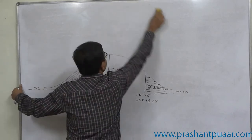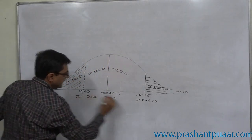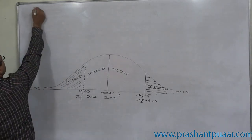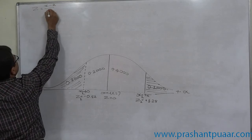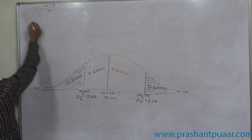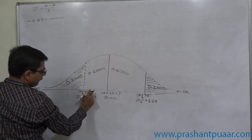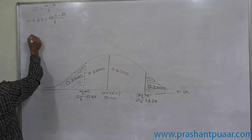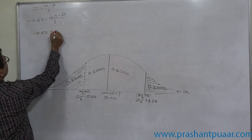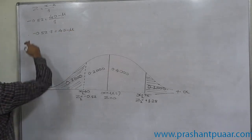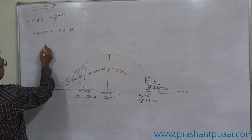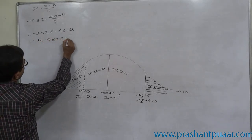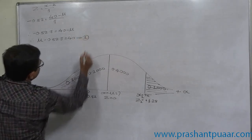We now have two different values of X — X1 and X2 — and two relevant values of Z, Z1 and Z2. We know that Z equals X minus mean divided by standard deviation. For the first case: minus 0.52 equals 40 minus mu divided by sigma. Simplifying: minus 0.52 sigma equals 40 minus mu, therefore mu minus 0.52 sigma equals 40. Let this be equation number one.